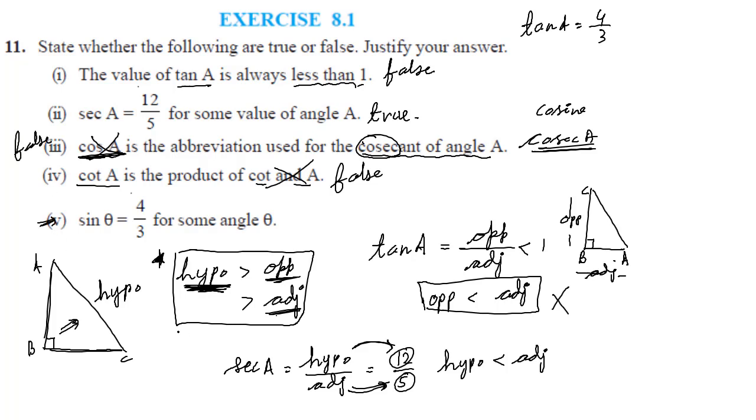Now fifth one. Fifth one is saying sin theta is equal to 4 by 3 for some angle theta. So what is the definition for sin? Sin is opposite divided by hypotenuse. And this value is given to us in the question as 4 by 3. That means opposite side is 4, hypotenuse is 3.